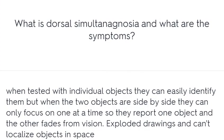What is dorsal simultanagnosia and what are the symptoms? When tested with individual objects, they can easily identify them, but when two objects are side by side they can only focus on one at a time. They report one object and the other fades from vision. They also have trouble with exploded drawings and can't localize objects in space.